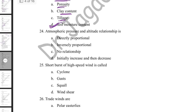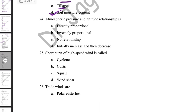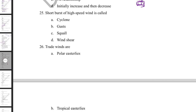Regarding atmospheric pressure and altitude: altitude is the height of a place above mean sea level. Atmospheric pressure is the pressure exerted per unit area by a vertical air mass. Atmospheric pressure is inversely proportional to altitude — it is high at mean sea level and very low at the top of hill stations.